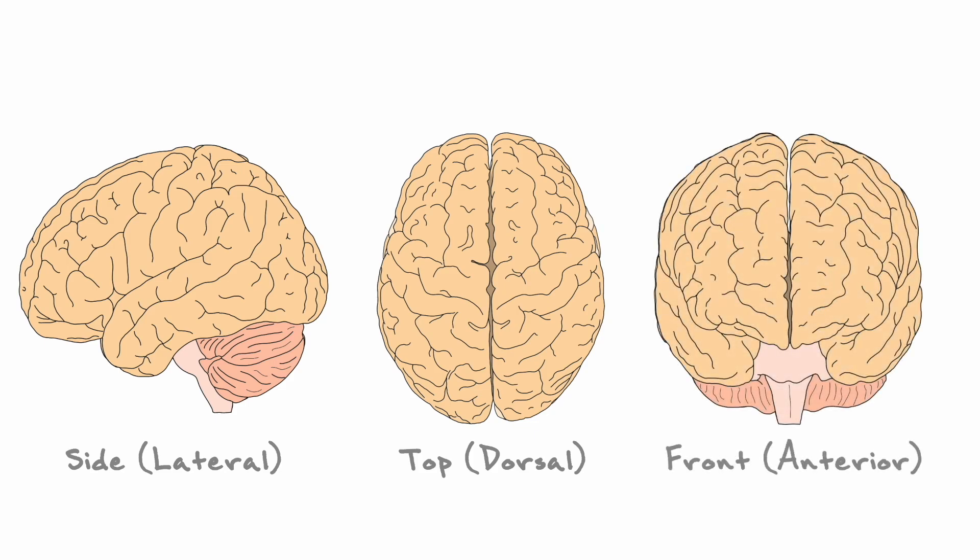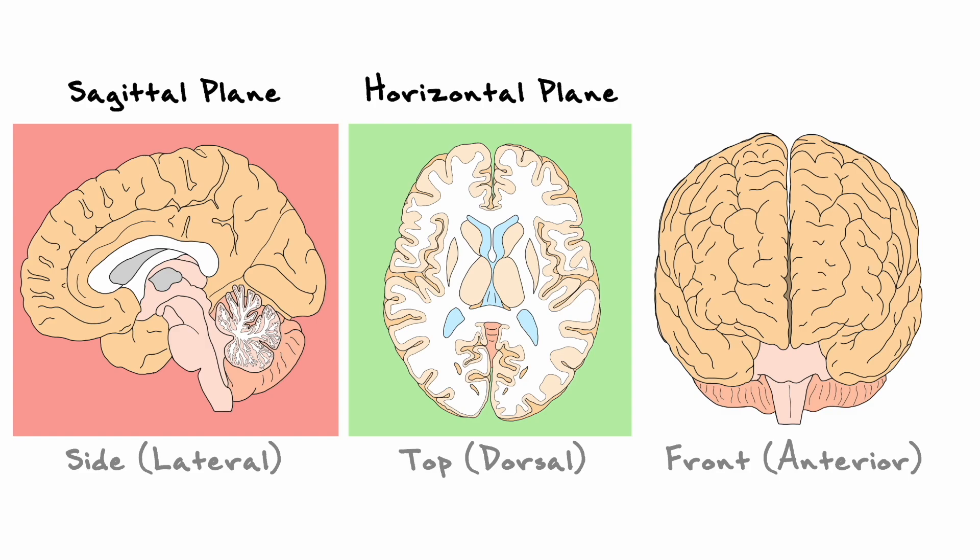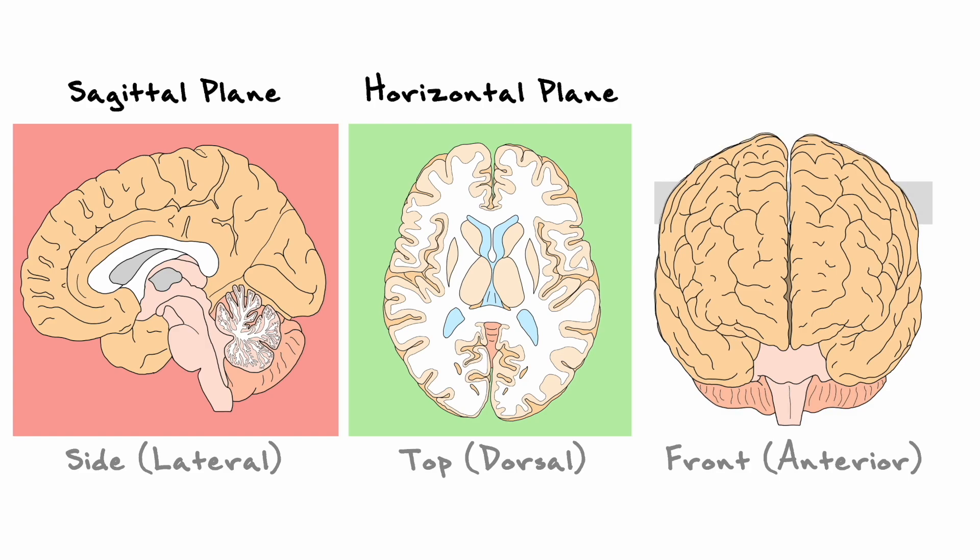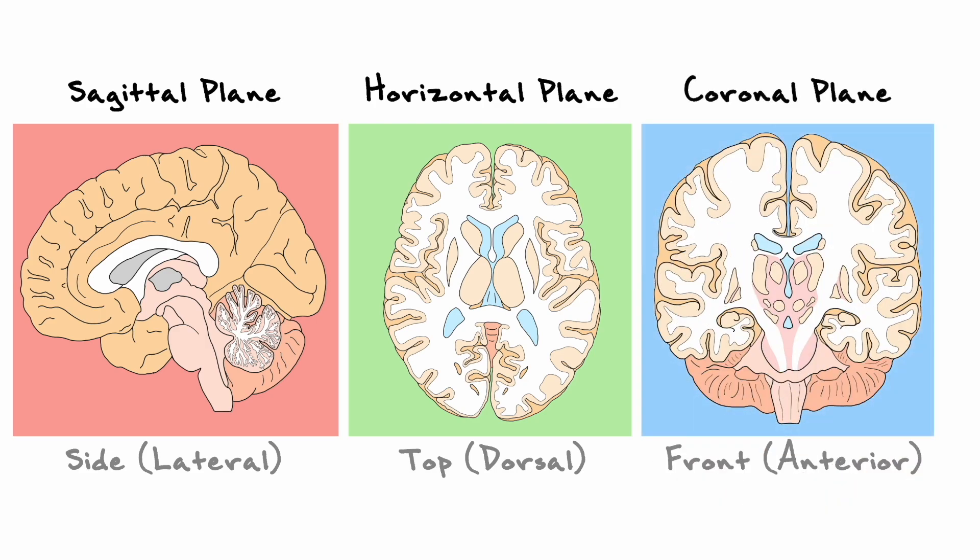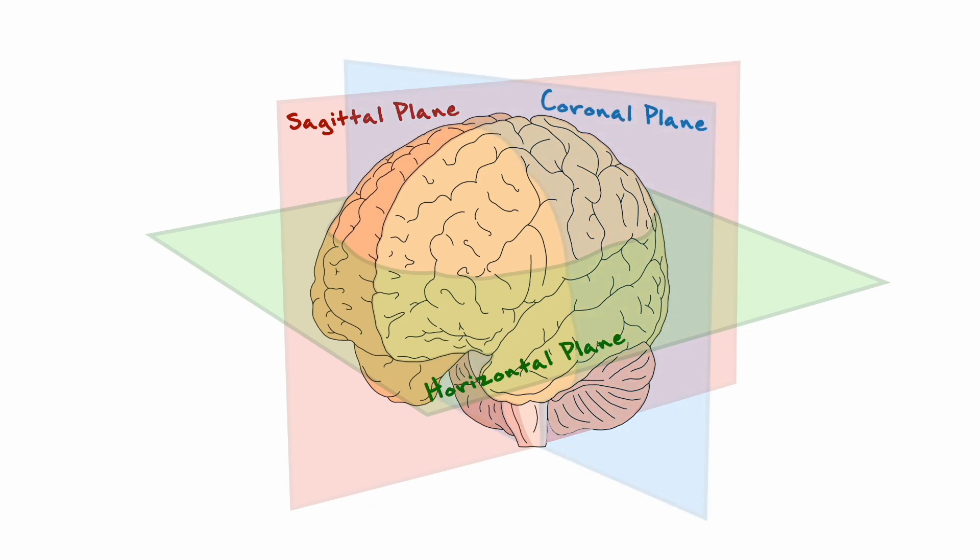If the brain is cut from the side view, this is said to be the sagittal plane. A cut while viewing from the top would show the horizontal plane and a cut at the front is called the coronal plane. These 3 different types of cuts provide various angles to analyze the brain and decompose the complex 3D structure in more manageable perspectives. To see all 3 planes on the same brain, here's how it would look. The sagittal plane cuts like this, the horizontal plane like this, and the coronal plane like this.